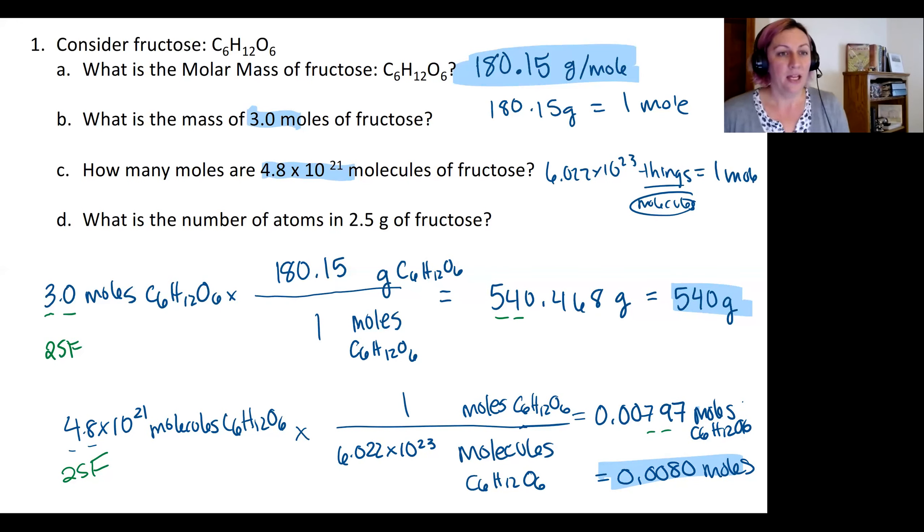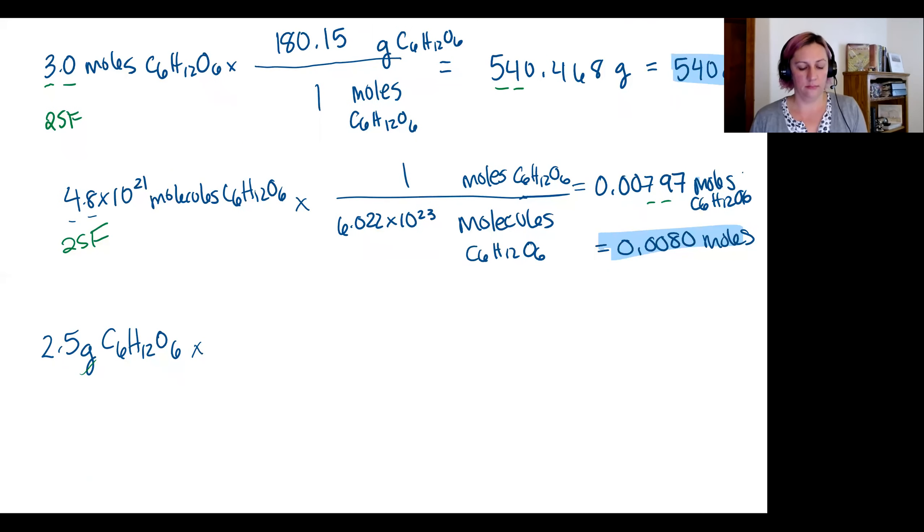Now we're asked what is the number of atoms in 2.5 grams of fructose. This one's not going to be a one-step conversion; this one's going to be a little bit more complicated. 2.5 grams of fructose will be our starting point and we're trying to convert this into atoms of fructose or atoms within the pile of fructose. Thinking about my conversions, I know the very first thing I need to get rid of is grams because I don't want the mass—I want a counting number for my final answer, and I'm going to need to figure out a conversion factor with atoms in it.